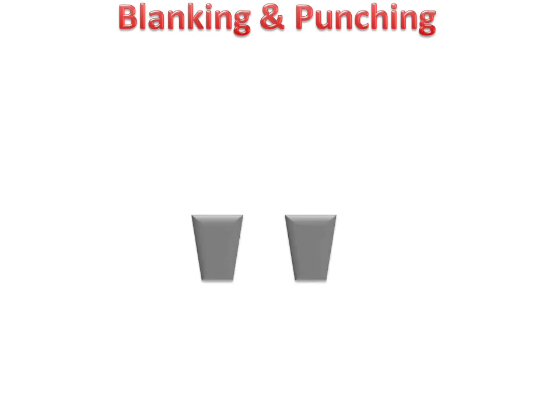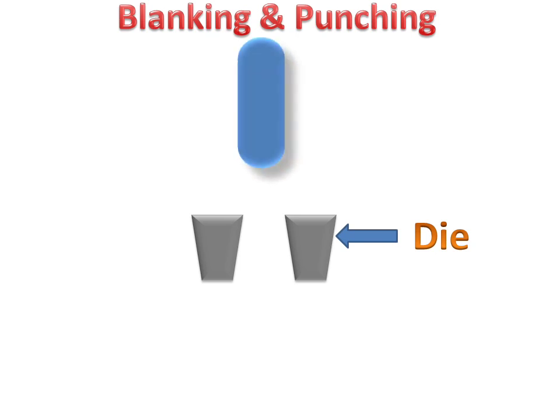Let's take an example. We have a die — the die is the desired shape which we want to produce. And there will be a tool which is used for blanking and punching.